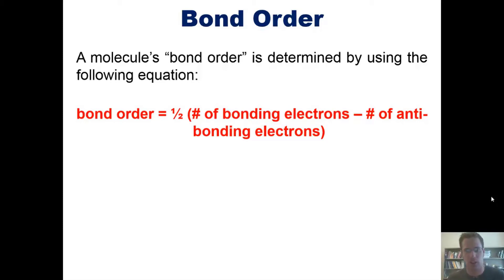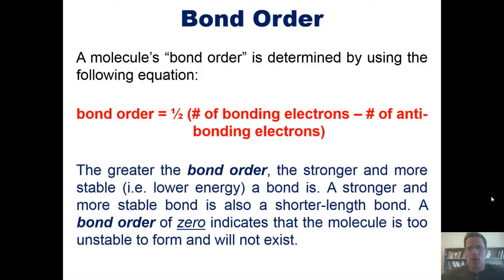Having more and more electrons in bonding orbitals generally means that your molecule is going to be more and more stable, while plopping electrons into antibonding orbitals makes them less and less stable. With that said, the greater the bond order, the stronger and more stable, i.e. lower in energy, a bond is. A stronger and more stable bond is also a shorter length bond. A bond order of zero indicates that the molecule is too unstable to form and will not exist.